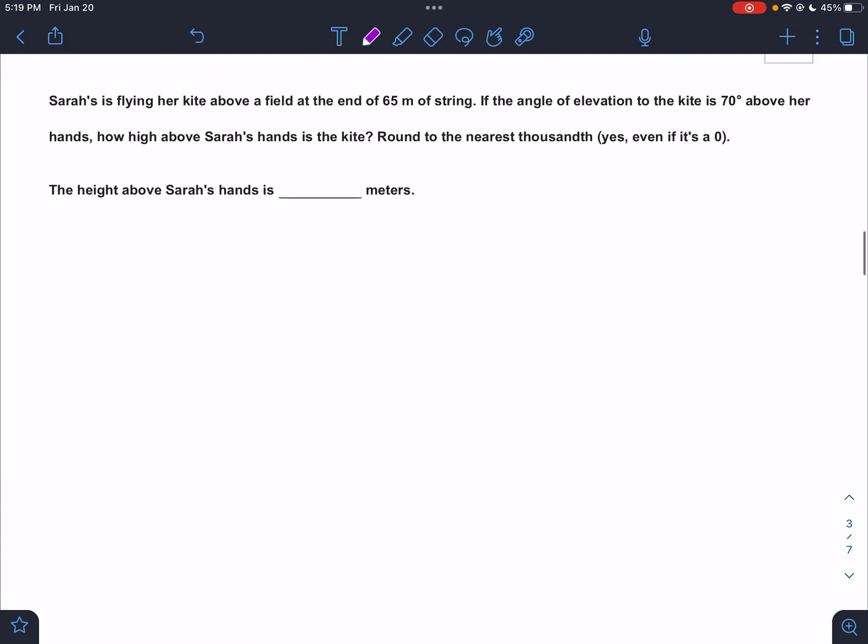Sarah's flying her kite above a field at the end of a 65 meter string. So we got Sarah flying a kite. So the string would be the hypotenuse, right? You're flying a kite. That's where the string would be.